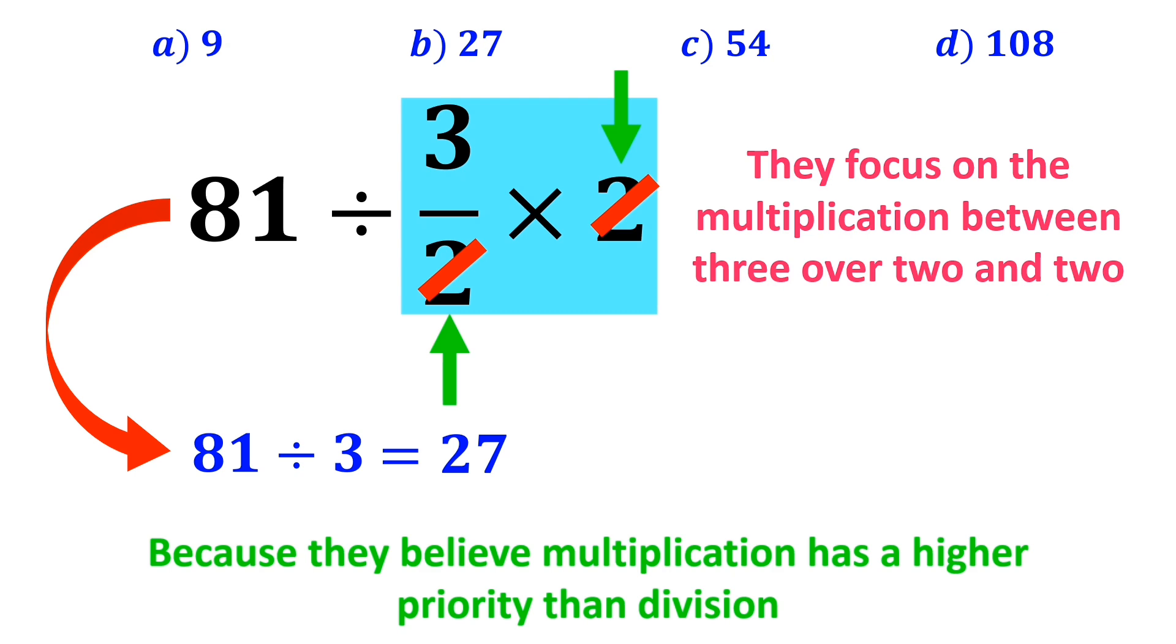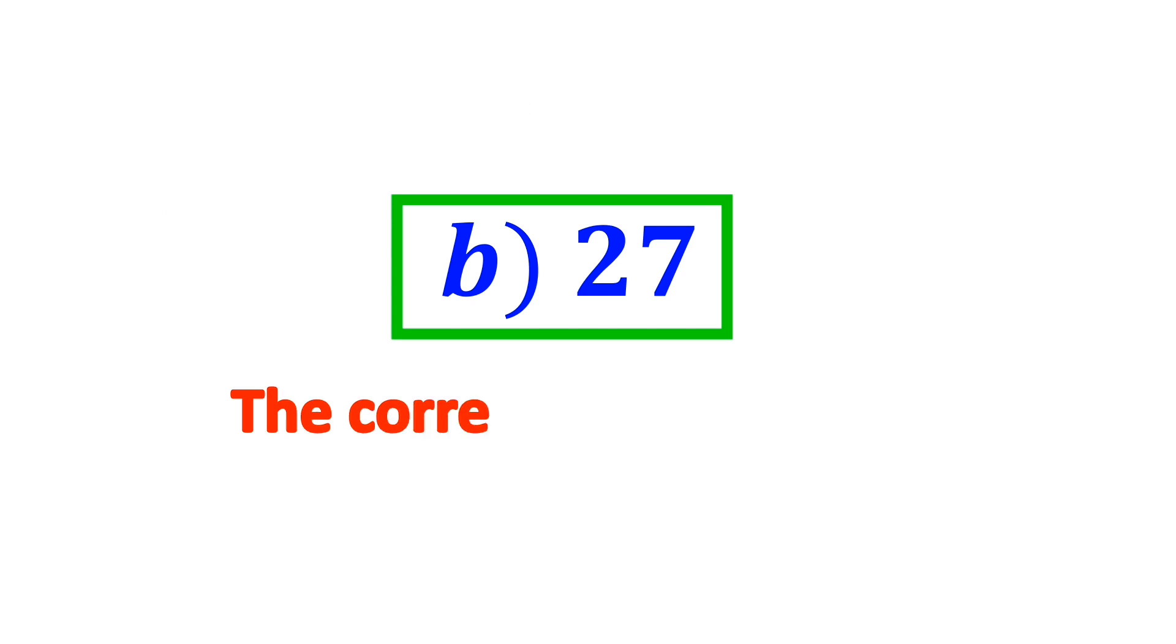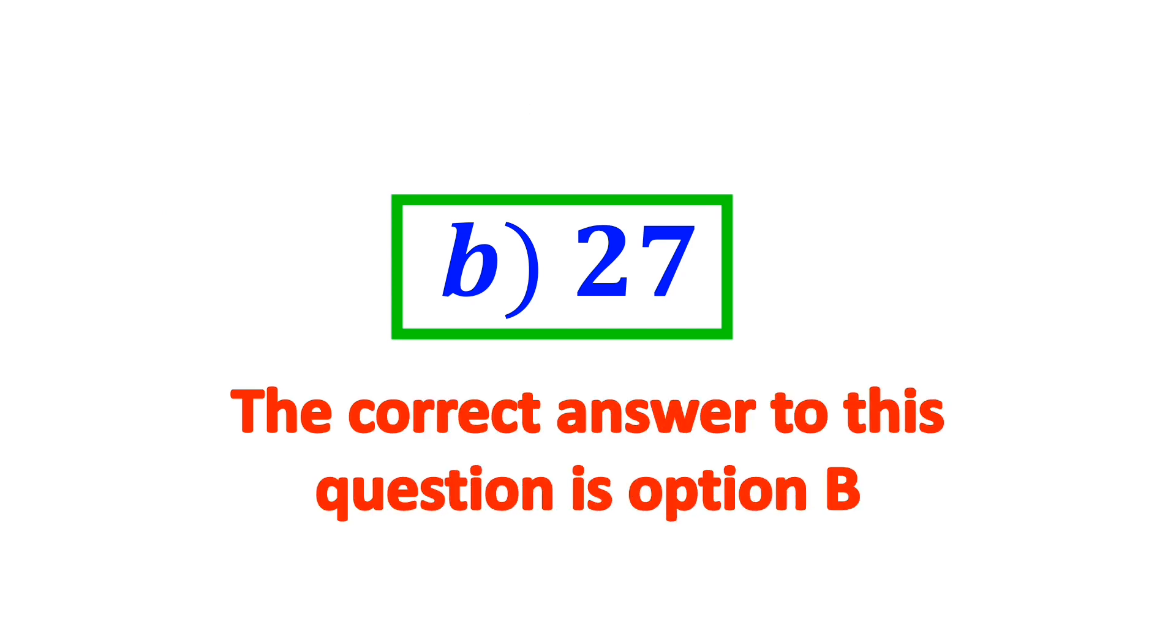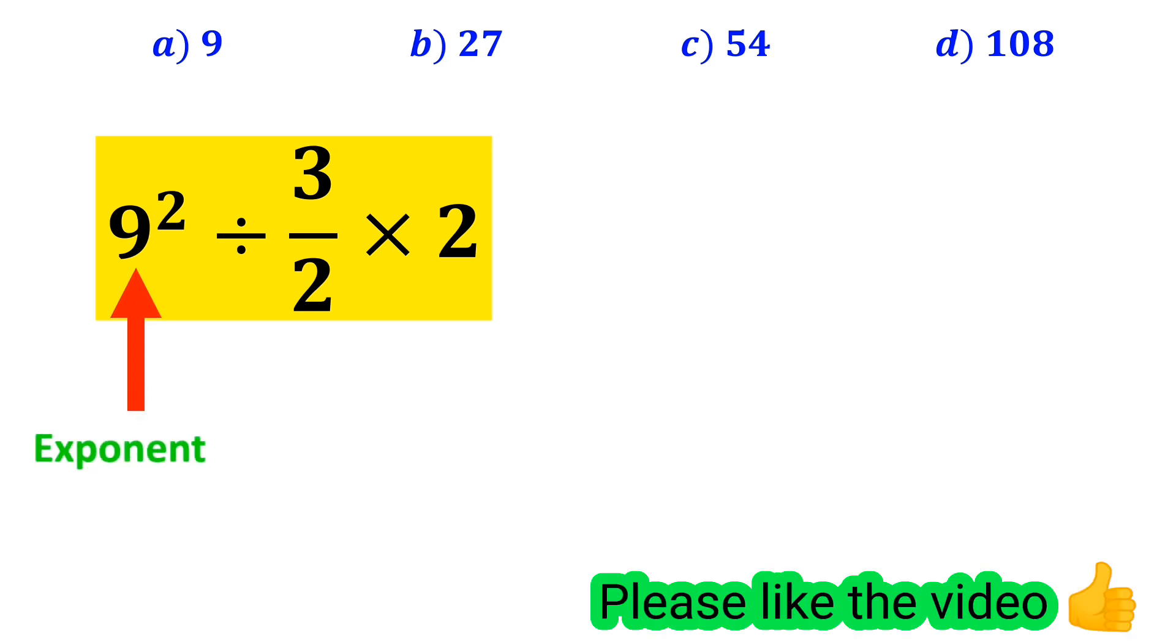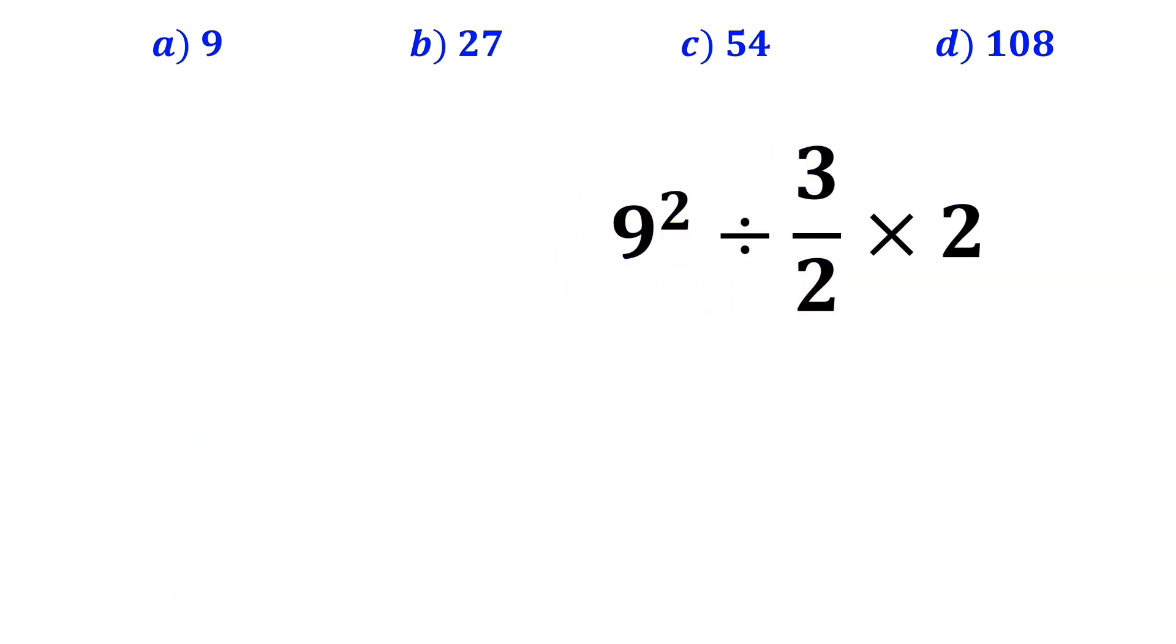And immediately, they conclude that the correct answer to this question is option B. But this answer is absolutely wrong. Now let's go step by step together and I will show you how we should solve this question. As you can see on the screen, in this expression, first we have an exponent, then a division sign, and finally a multiplication. To solve this question, we must follow the PEMDAS rule.